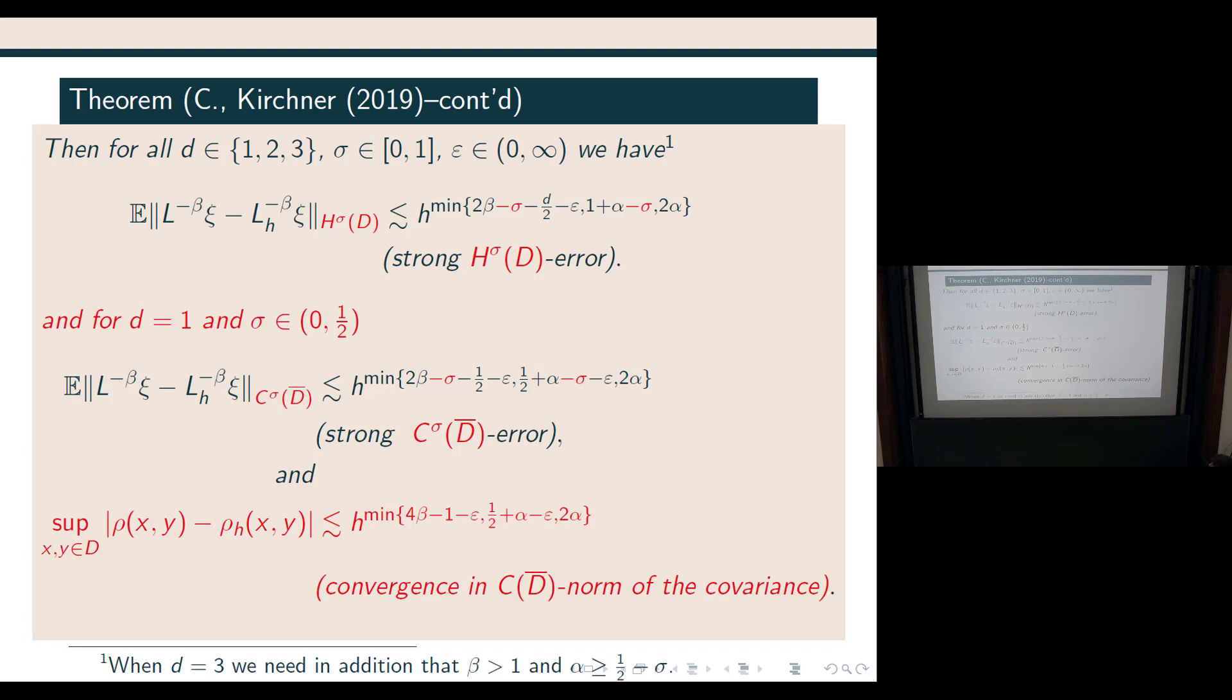And similarly, we can also estimate the error in the Hölder norm, so in particular also in the supremum norm. And I want to point out that here the rates are, if I take the sigma Hölder norm and the sigma Sobolev norm, then these rates are the same. And so this is not what you would get if you would just, if you would take this error and apply Sobolev embeddings. Of course, if you could do this for W^{sigma,p}, for p arbitrarily large, and that's what you would sort of expect, but we didn't do it, then that's what you would get. But we did this independently from the H^sigma estimate.